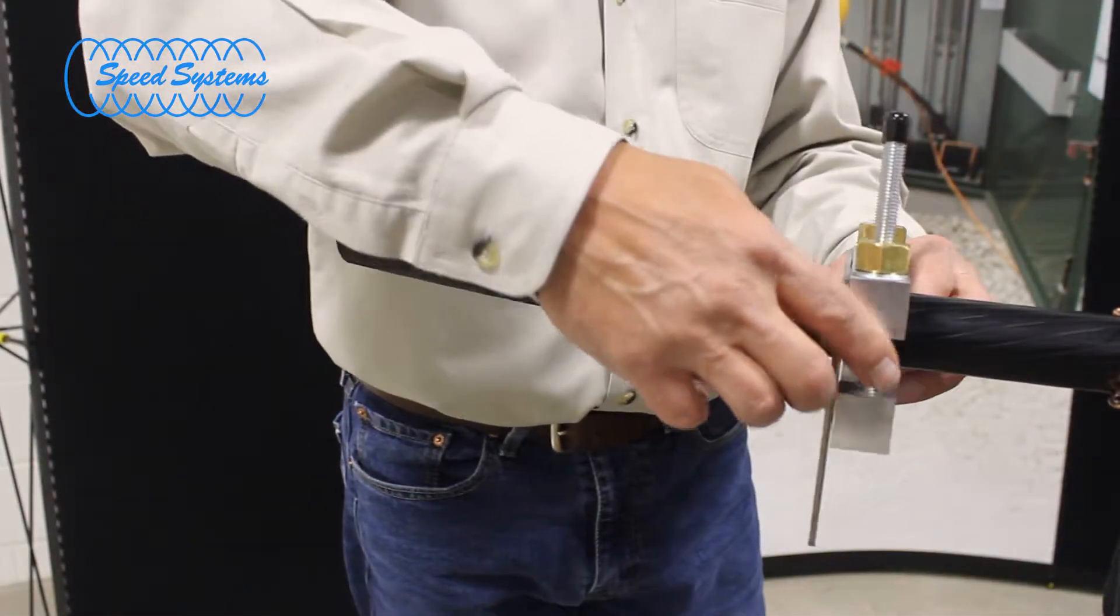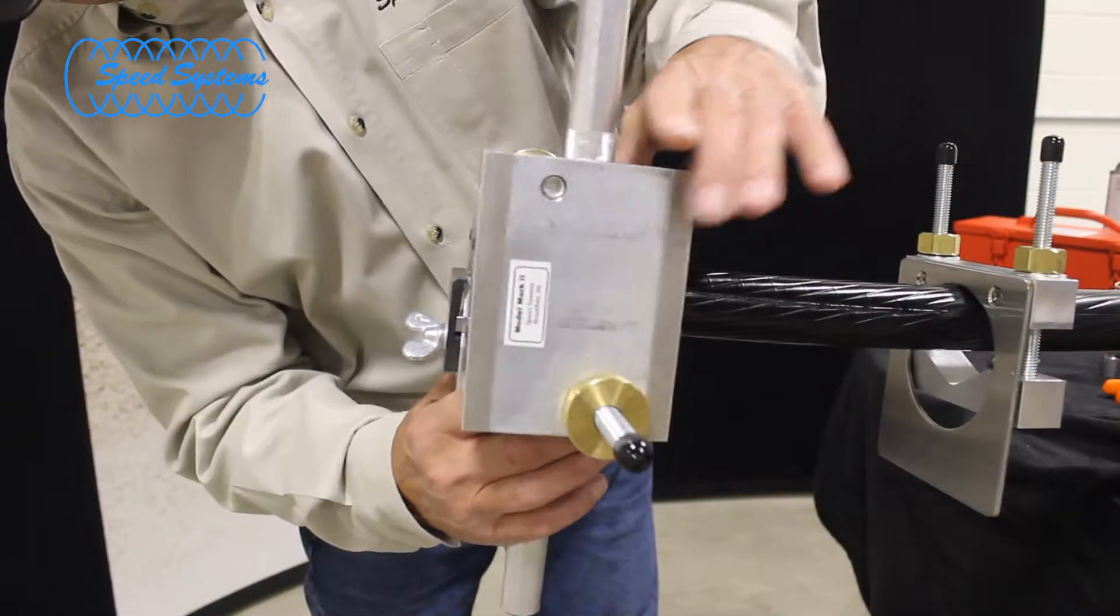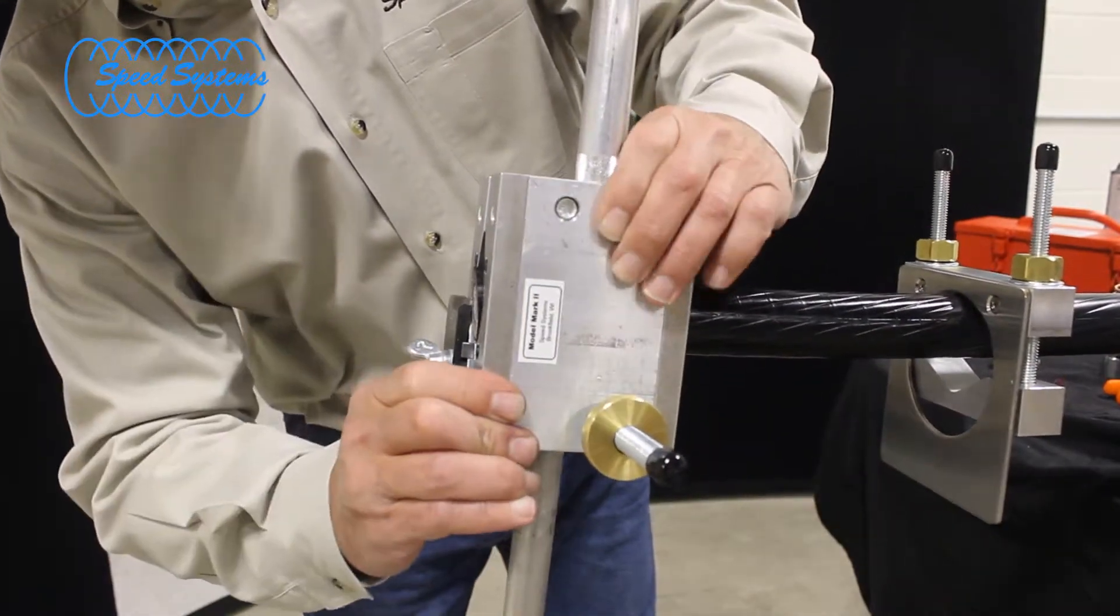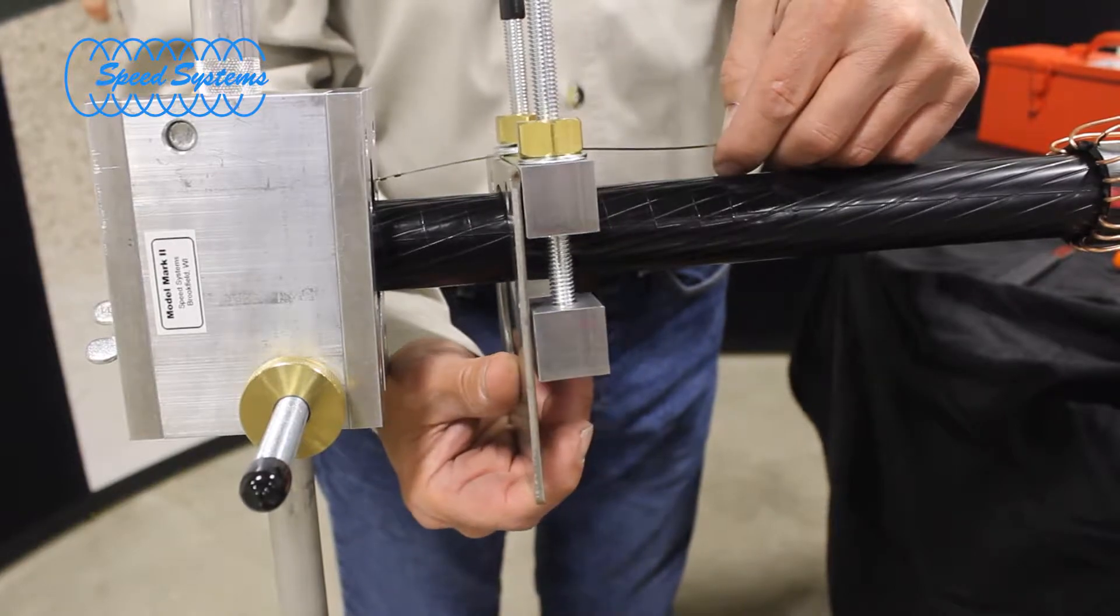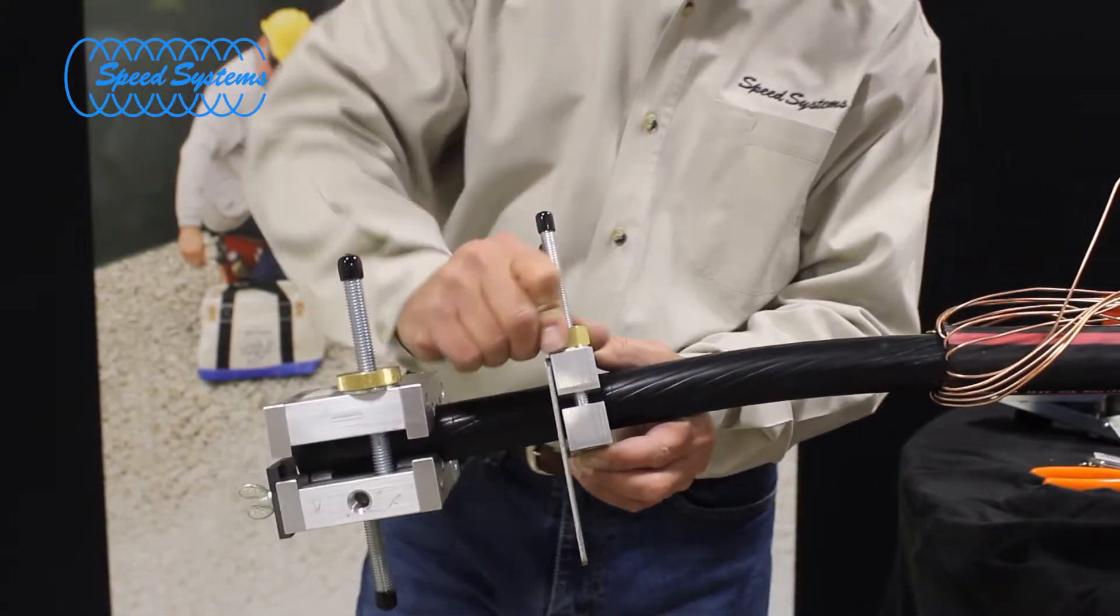Next, slide the tool stop onto the cable and clamp the Mark II onto the end of the cable. Measure the strip back length from the back of the tool and firmly clamp the tool stop to the cable at that point.